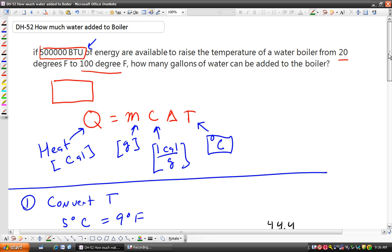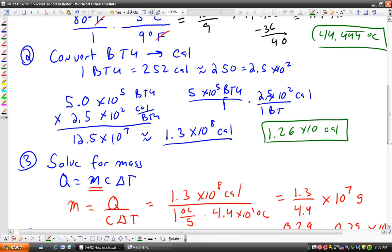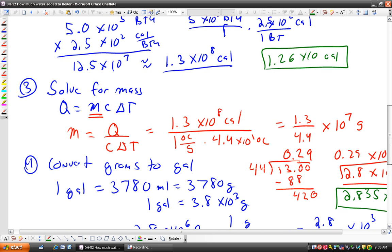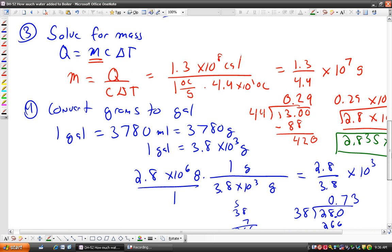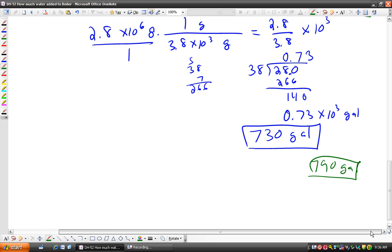I should probably just recap the problem. You've got a boiler. You're raising some amount of water, or some unknown amount, 80 degrees Fahrenheit, with 500,000 BTUs of energy. Use the formula Q equals MC delta T. You're going to have to do some conversions. You're going to convert the 80 degrees Fahrenheit into degrees Celsius. You're going to convert the heat in BTUs into calories. When you solve for the mass, it's in grams. But the question asks for the amount of water in gallons. You're going to need to convert the number of grams into gallons. If we do that by hand, I got 730 gallons. And when I did it in the calculator, I got 790 gallons.